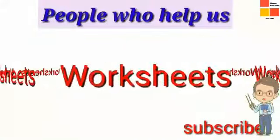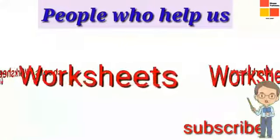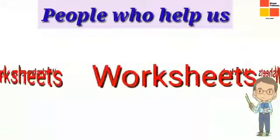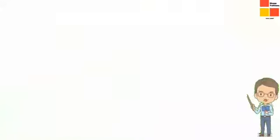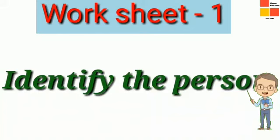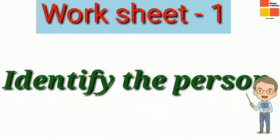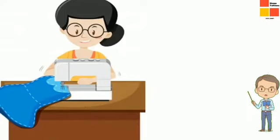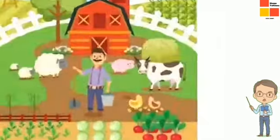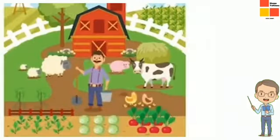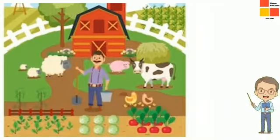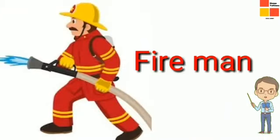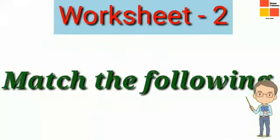I will show you some pictures and you will have to identify them. Whose picture is this? The answer is on your lips — it's a tailor. And who is this person in the garden? He is not a gardener, he is a farmer because he is cultivating. And by seeing this picture, you can identify it is a fireman.